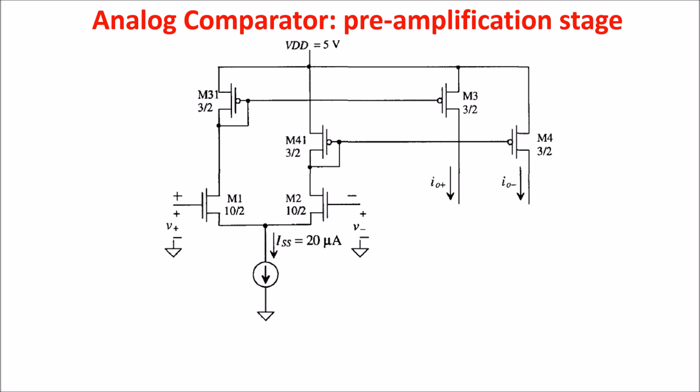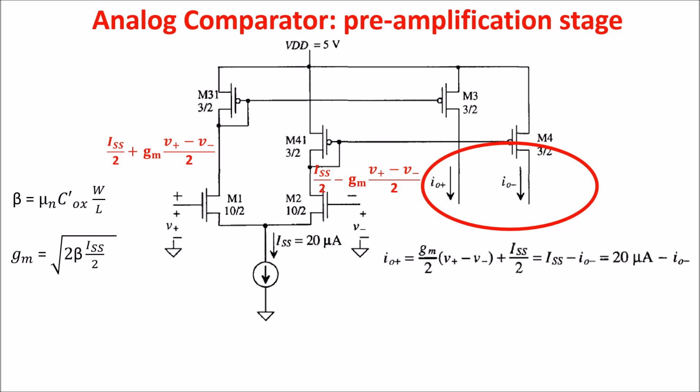If V plus is different from V minus, the currents in the two branches are these, and they are mirrored in this portion of the circuit. I O plus is this, where GM is the transconductance of M1 and M2, assuming them matched. So, the difference in the input voltages is amplified and turned in a current through the transconductance GM, which sets the gain of the stage. GM depends on the tail current ISS and on the MOSFET M1 and M2 parameters.